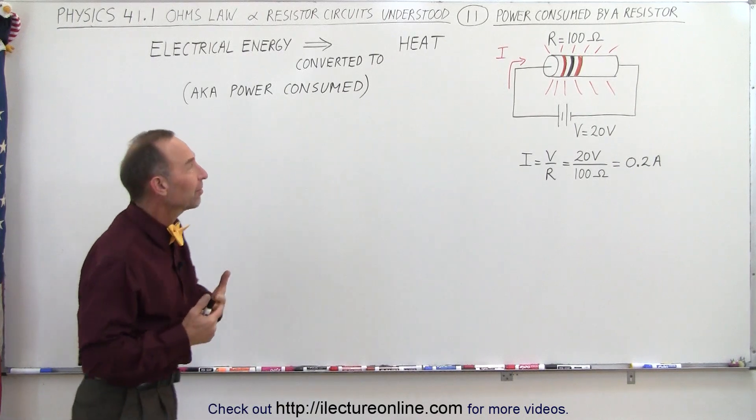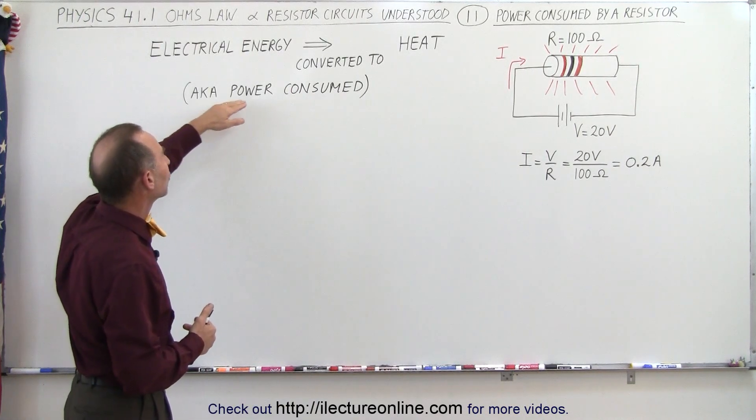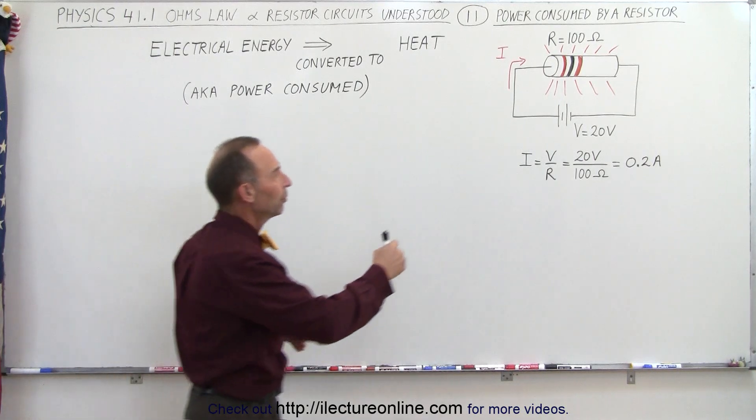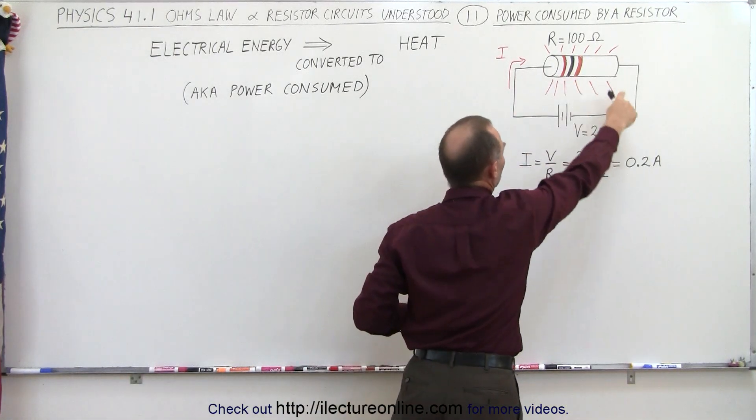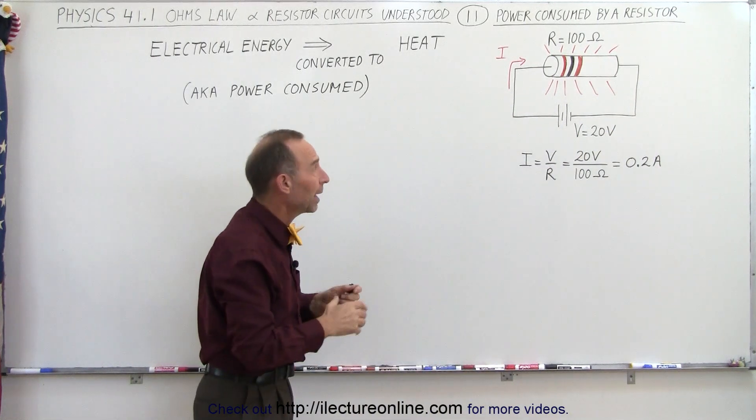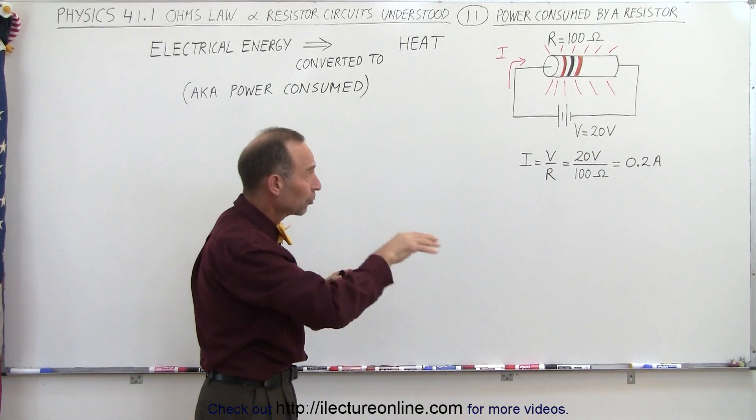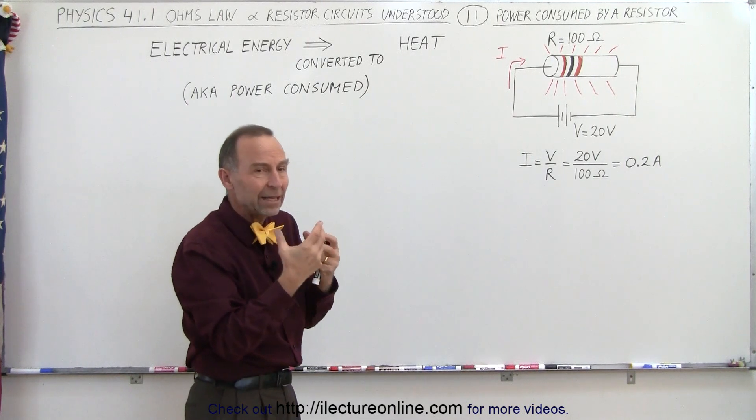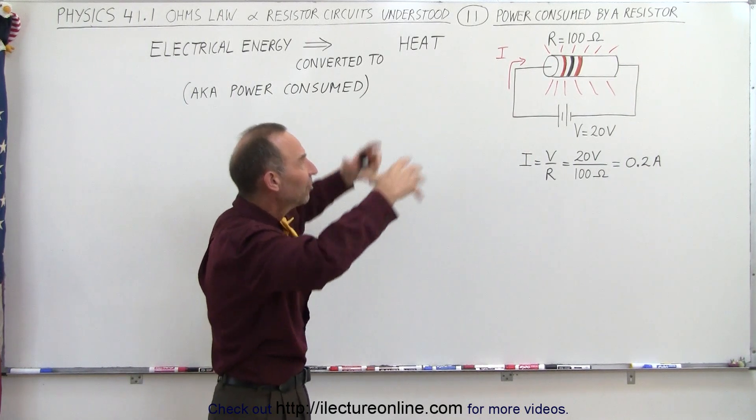Another way of expressing that is to say that it consumes power. A resistor consumes power. When you have a current that's forced through a resistor from a battery or power supply, as you're pushing electrons through that resistor, the resistance will cause the resistor to heat up and dissipate heat.